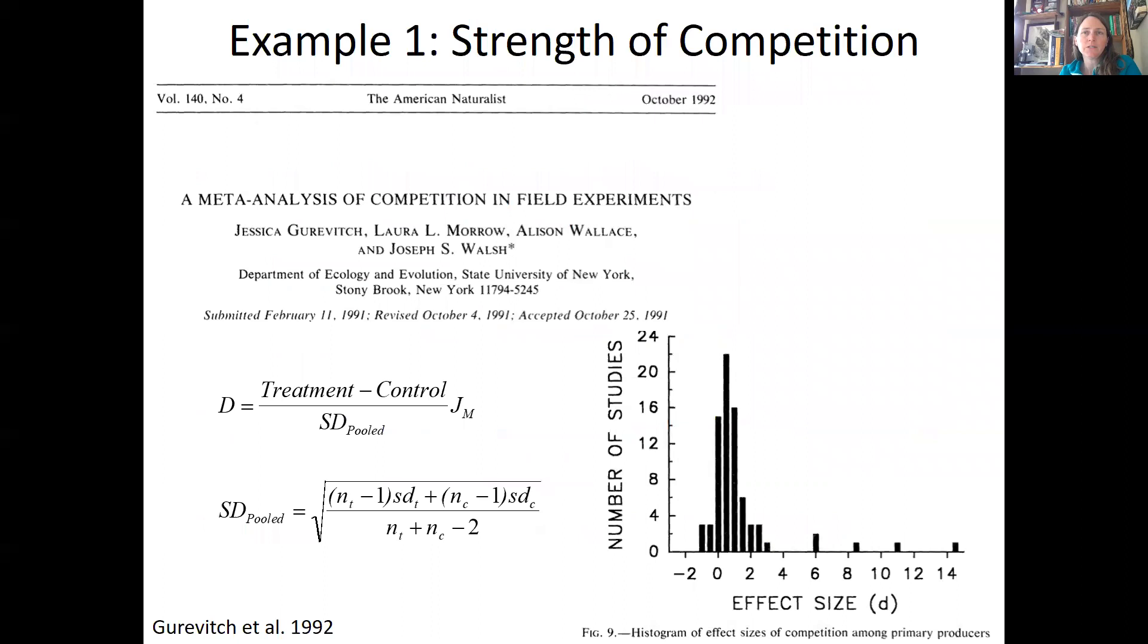So here's an example of competition in field experiments. So Jessica Gertovich and her colleagues used Hedges D and they calculated, they looked at a number of studies and they looked at the effect of competition. And you can see here this histogram, the zero is kind of in the middle, but there's more positive effects of competition, right? So the effect of competition was overwhelmingly positive in this case. And this is just an example. I'm not going into the details. I don't know what a positive effect actually meant in this study. And this was competition among primary producers. So just to show you how you might demonstrate effect size.